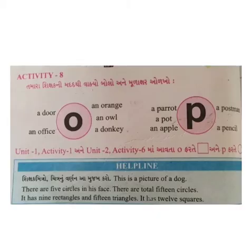Next, Activity 8. तमारा शिक्षक निमदत्थी, वाक्य बोलो अने मुलाक्षर ओडखो. Alphabet O: a door, an office, an orange, an owl, a donkey. Next, alphabet P: a parrot, a pot, an apple, a postman, a pencil.